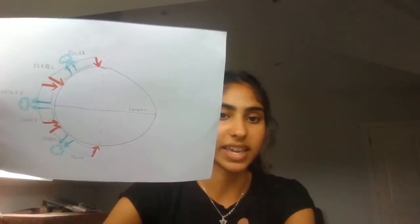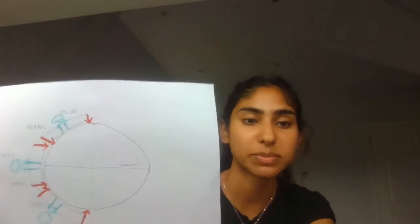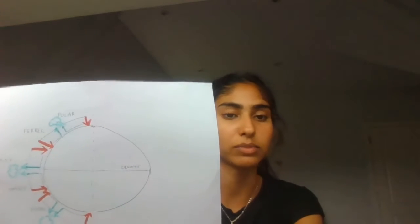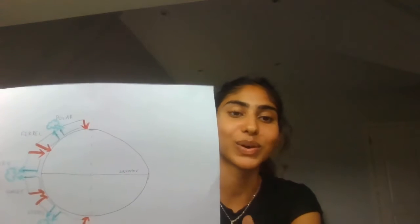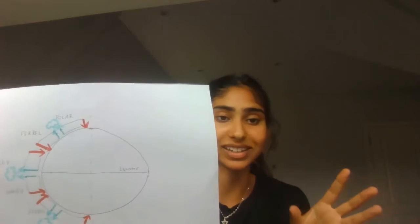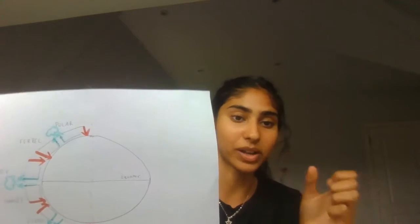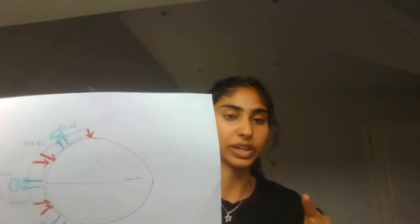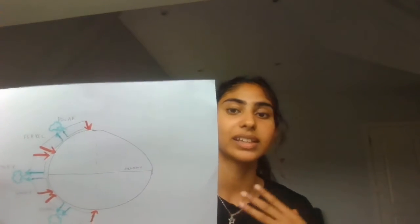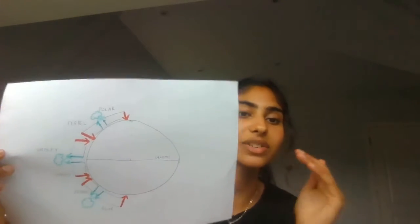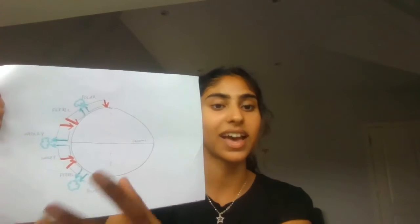So why does air sink or rise at different places? We know the equator is the hottest part of the Earth, so the air above it is heated very much. If the air is heated, the air becomes less dense and it rises. As it rises, it gets cooler — because if you've ever been on top of a mountain, you'll notice it's a lot cooler up there. So when hot air rises into a cool climate, it cools down. As this hot air rises, it cools, it condenses, and it forms clouds.